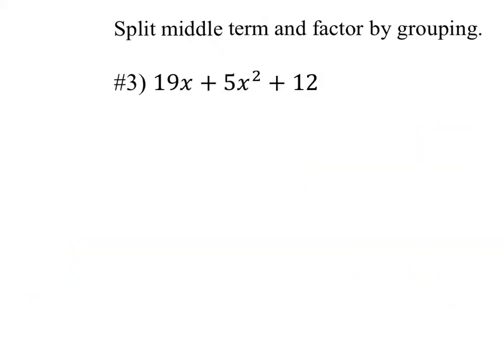Split the middle term and factor by grouping — this is our second example, third example overall on the back of your notes. First, write the terms in descending order with respect to the exponents: 5x squared plus 19x plus 12. Second, make sure the leading coefficient is positive, which it is. Third, check if there's a GCF of the three terms — in this case the GCF is 1, so we don't factor anything out.